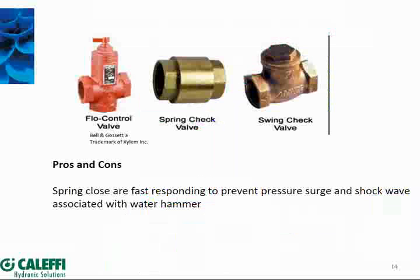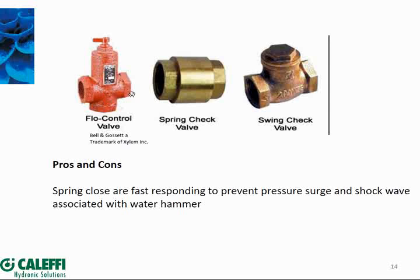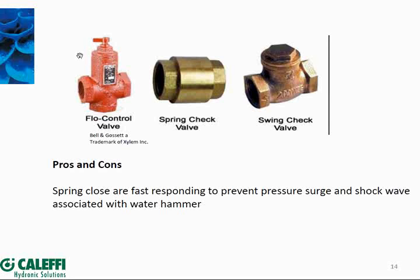Here's what's available in the market to stop flow and prevent thermal migration. The first, courtesy of Bell and Gossett, is a weighted flow check — a weighted plug inside that closes when the pump stops. There's engineering in the shape of that plug so it doesn't vibrate and make noise. It can be used as a straight-through or angle version. For a three-quarter-inch size, it takes about half a pound of lift to open that check valve off its seat and allow flow.